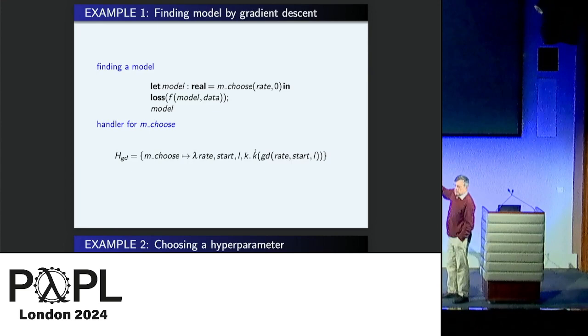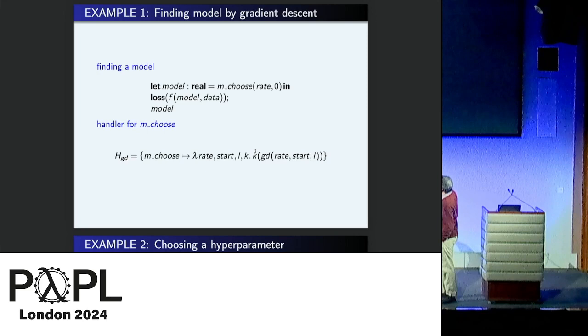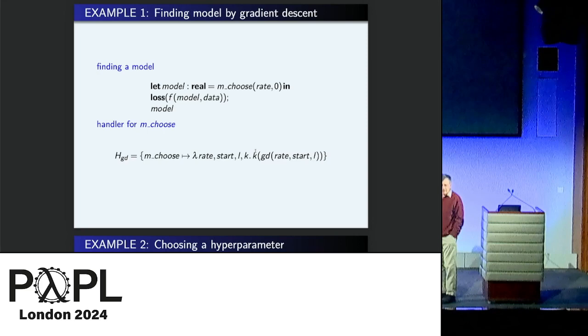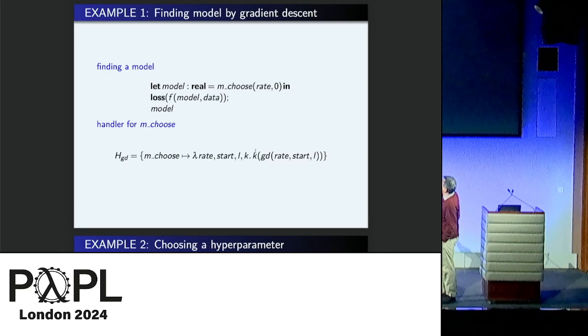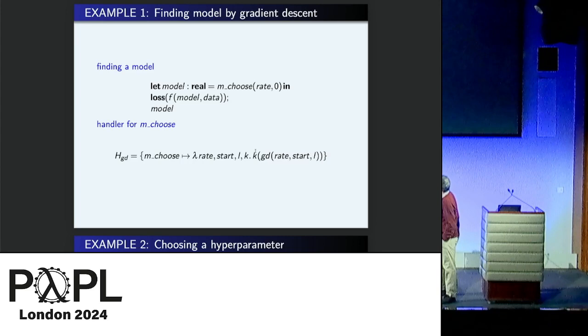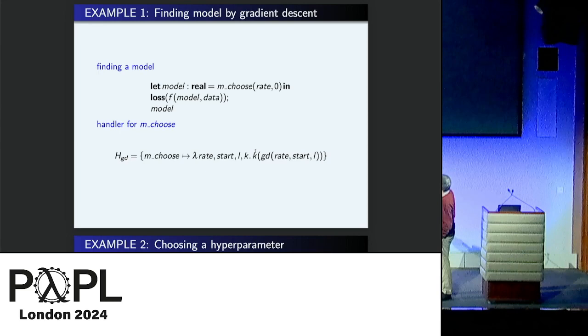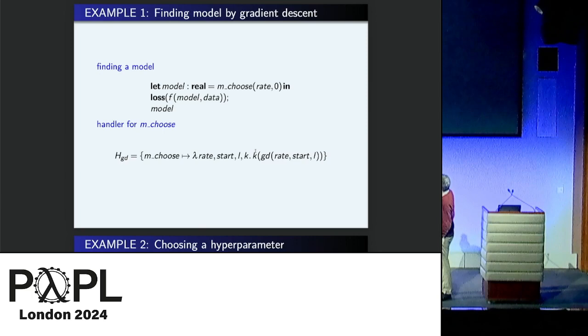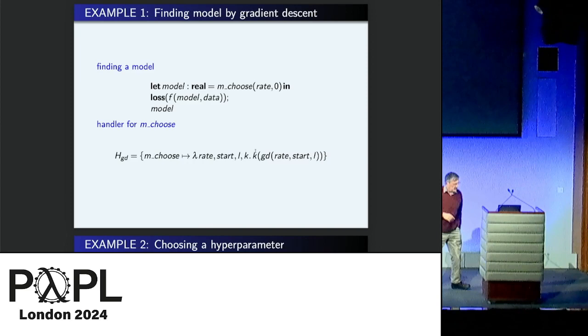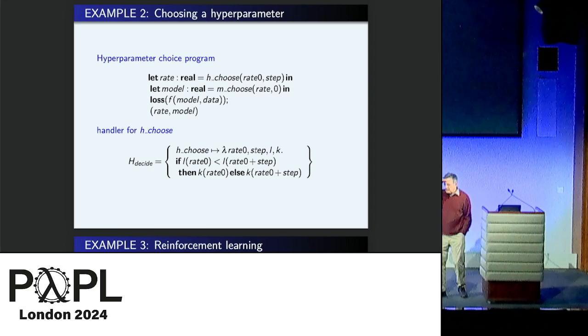Here's some examples. Suppose we want to find a model. We've got some data. We know how much a given model costs. So we let the model be, miraculously choose, model choose, starting with, we're going to have a rate and a zero. It's going to be gradient descent. And the loss we get is whatever that choice of model is. We need a handler. The handler says, it's given a rate and a start. That's rate and zero in that case. And it's got the loss and the continuation. So it does this gradient descent using the loss function. And it calls a continuation with the result. So that should seem natural at this point, which I think is hopefully nice.